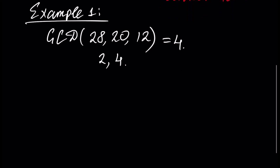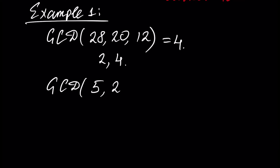Next: GCD of numbers 5, 20, and 50. It's obvious to see that five is the GCD because five divides each of these three numbers, and this is the biggest number because one of these numbers is five itself.